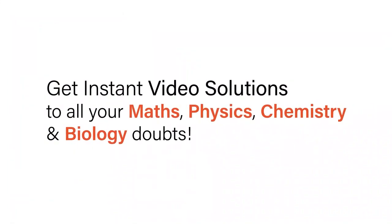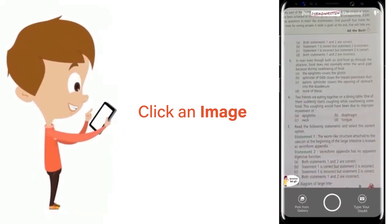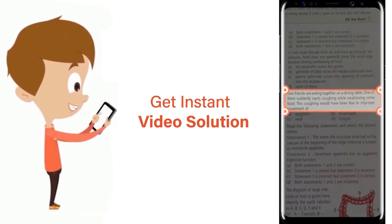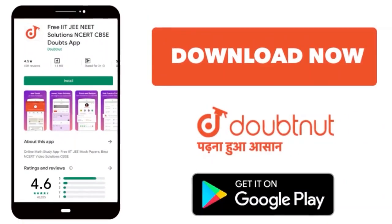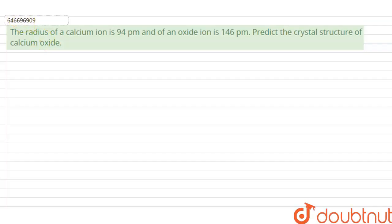With Doubtnut, get instant video solutions to all your maths, physics, chemistry, and biology doubts. Just click the image of the question, crop the question, and get instant video solution. Download Doubtnut app today. Hello everyone, let's start the question. The question says that the radius of calcium ion is 94 picometer and oxide ion is 146 picometer. Predict the crystal structure of calcium oxide.